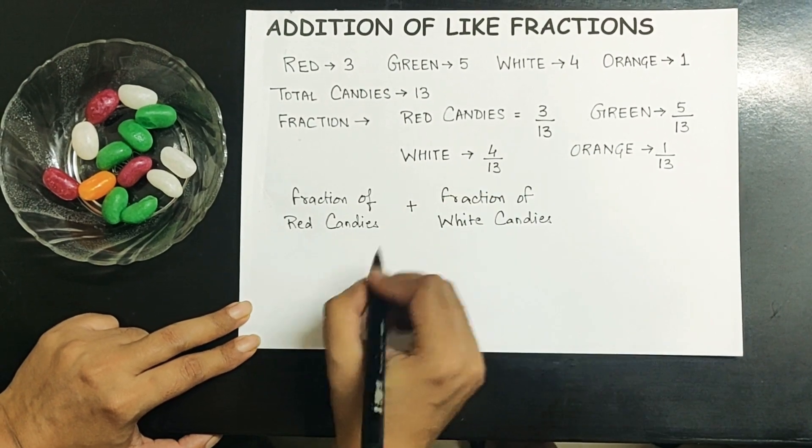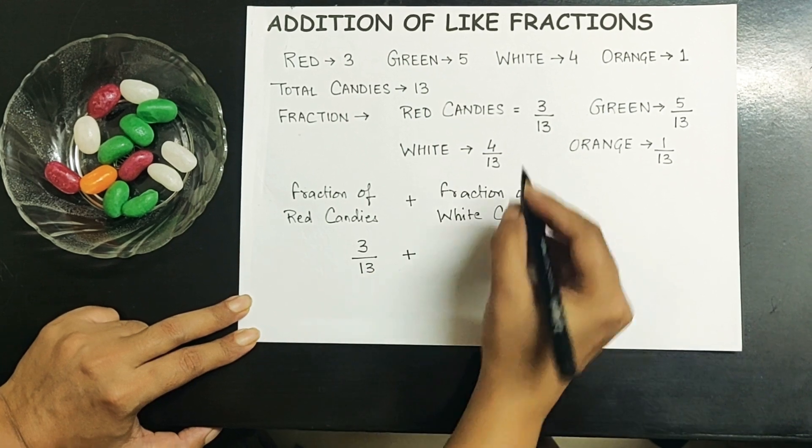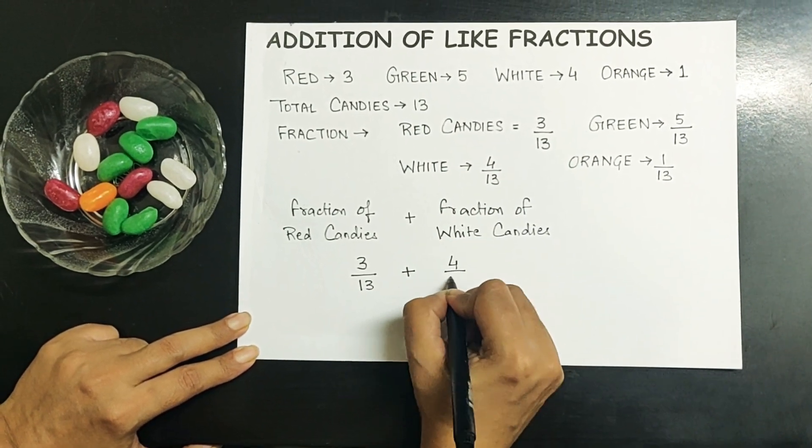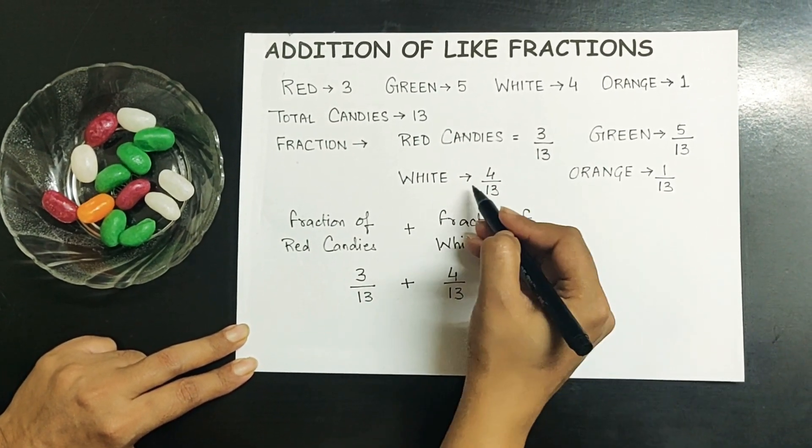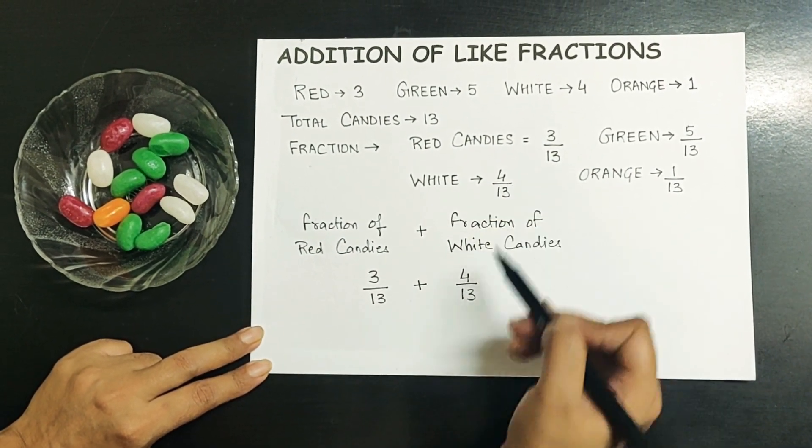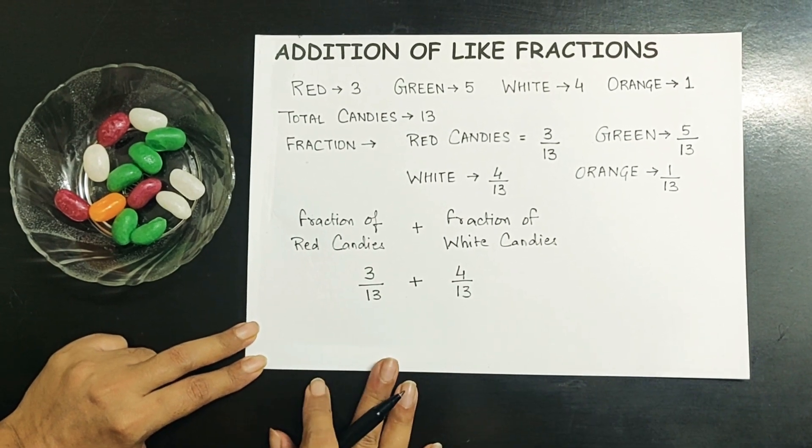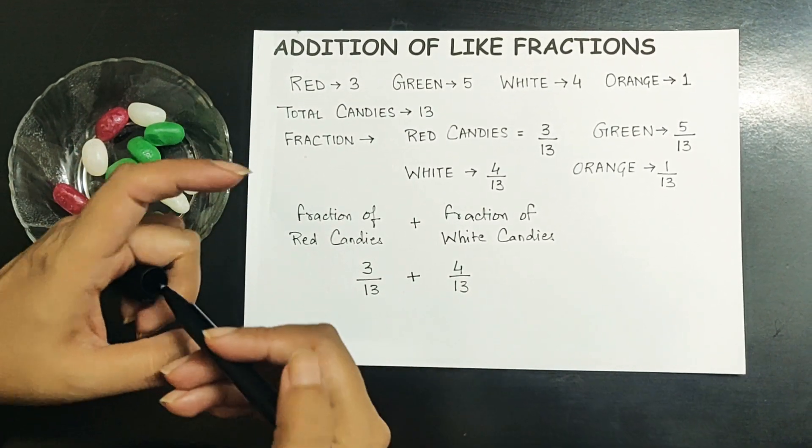Let us express it in the form of fractions. The question is now in the form of 3 upon 13 plus 4 upon 13. Red candies represent 3 out of 13, white candies represent 4 out of 13.